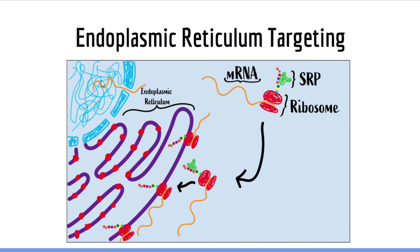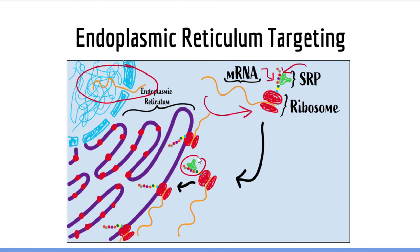Normally, mature mRNA leaves the nucleus and finds a cytosolic or free-floating ribosome. Once translation begins and the new protein starts forming, the signal recognition particle, or SRP, recognizes a unique amino acid sequence in the growing polypeptide chain. The SRP binds this amino acid sequence, then binds a pore in the endoplasmic reticulum membrane and brings the ribosome-protein complex into the endoplasmic reticulum, essentially making the ribosome an endoplasmic reticulum ribosome. The rest of the protein is then synthesized in the endoplasmic reticulum and becomes part of the ER vesicular transport system.